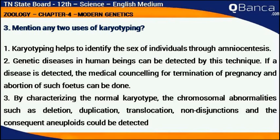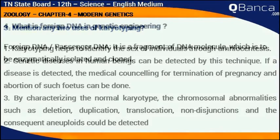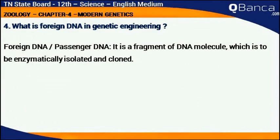By characterizing the normal karyotype, chromosomal abnormalities such as deletion, duplication, translocation, non-disjunctions, and the consequent aneuploids could be detected.